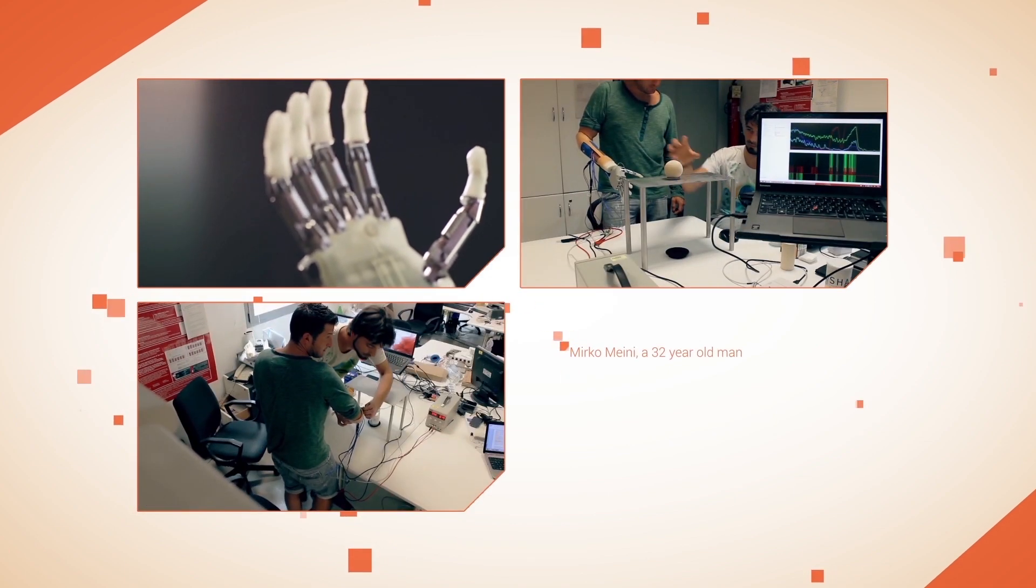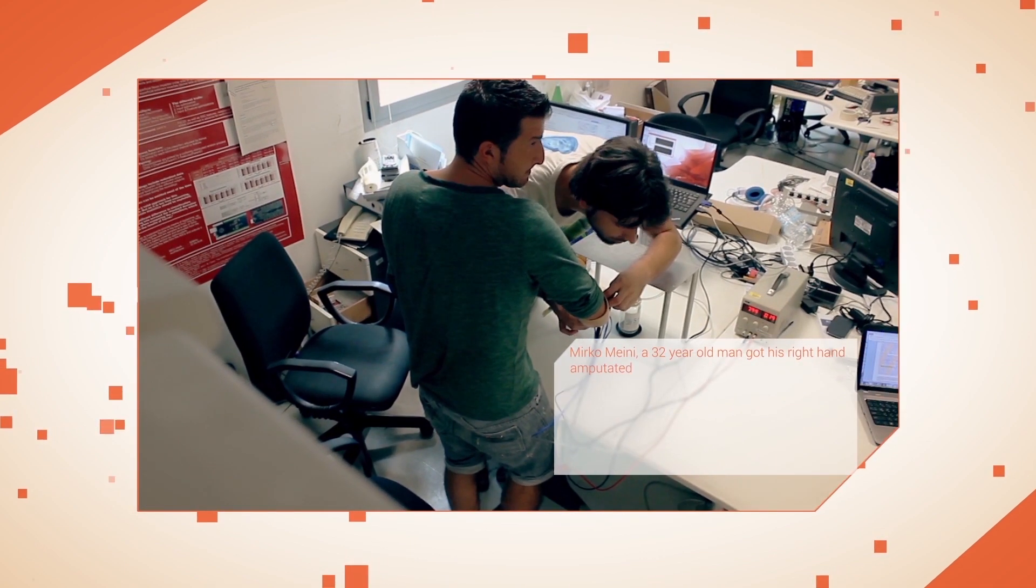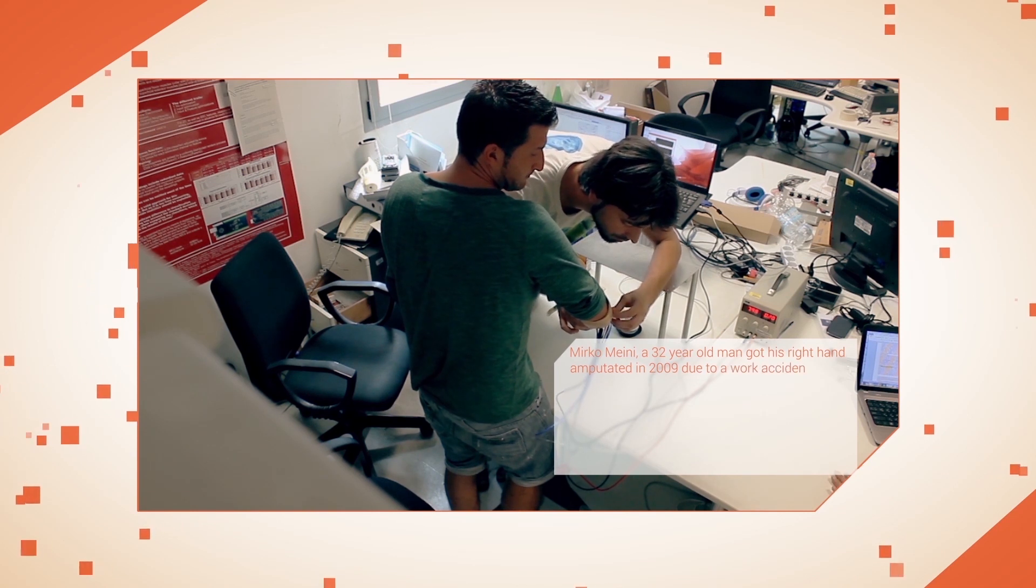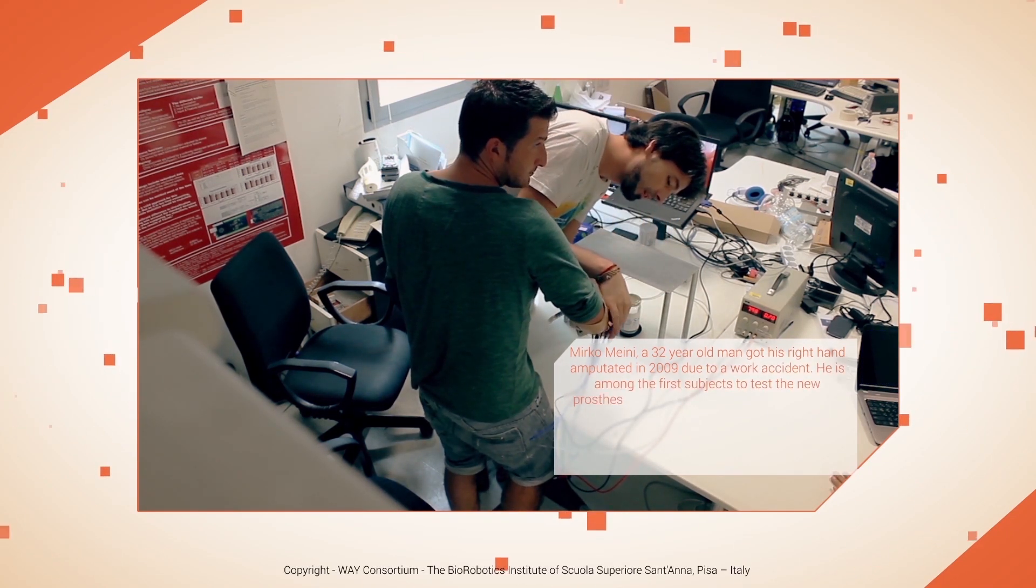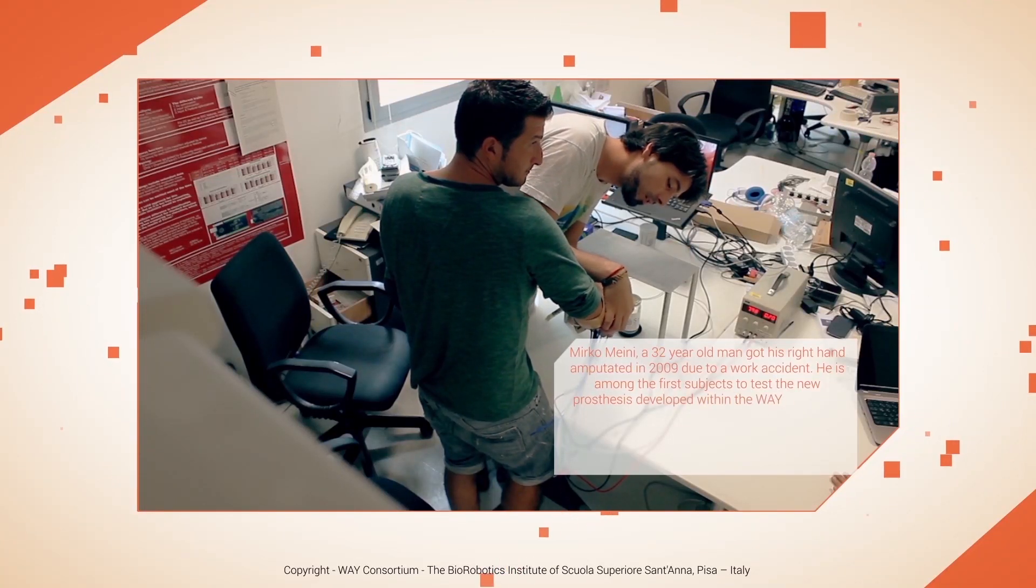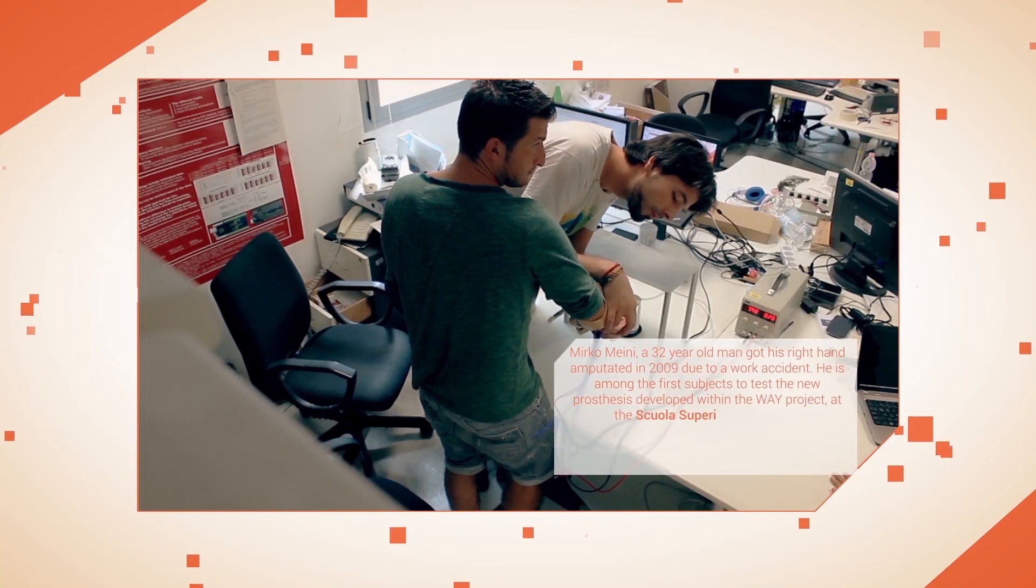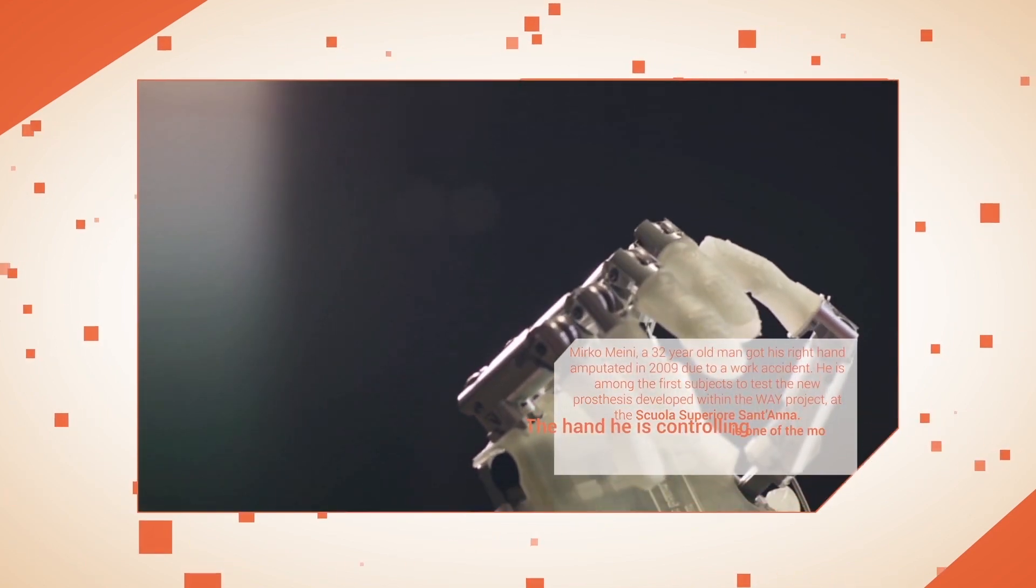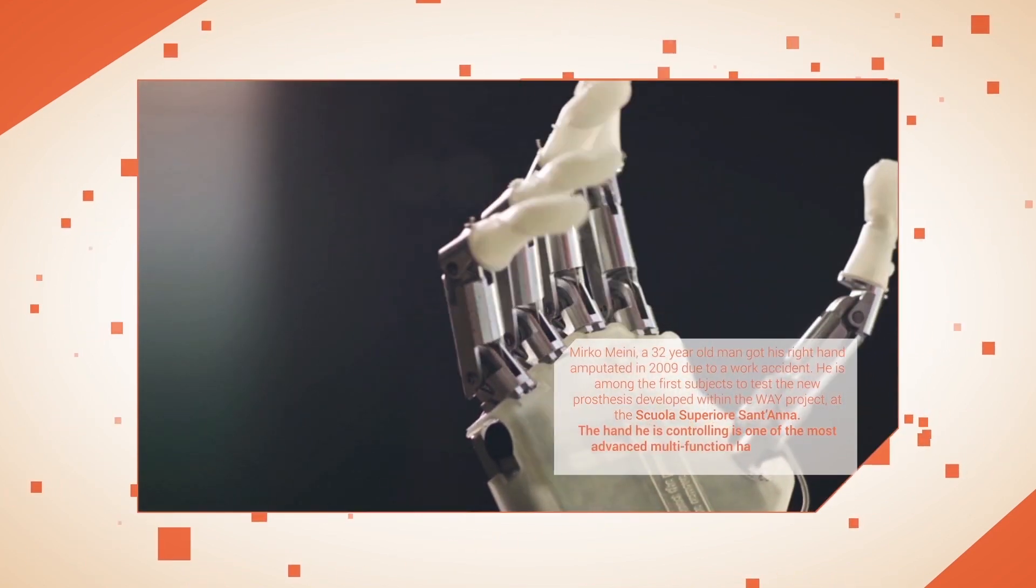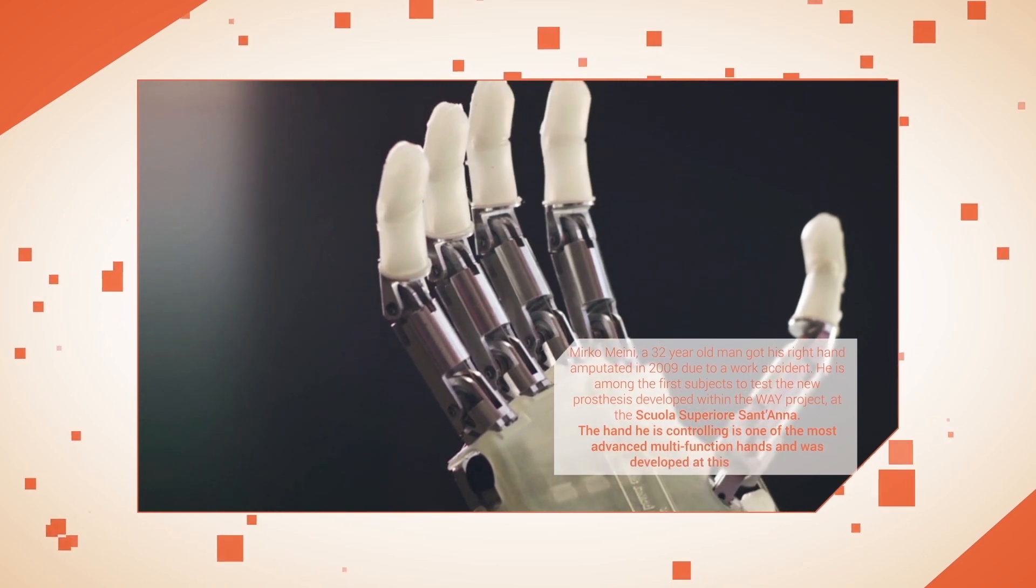Mirko Menini, a 32-year-old man, got his right hand amputated in 2009 due to a work accident. He is among the first subjects to test the new prosthesis developed within the WAY project at the Scuola Superiore Sant'Anna.